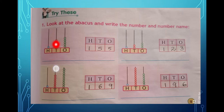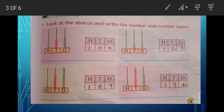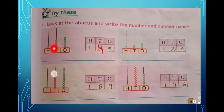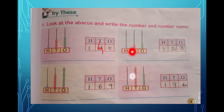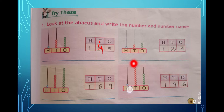In tens place: one, two, three, four — that is four. I had written five earlier, so let me correct it to four. And how many hundreds? One — that means one hundred, four tens, and five ones, so the number is 145. In the same way, the next abacus: hundreds place is one, tens place has two beads, ones place has three beads — so the number is 123.